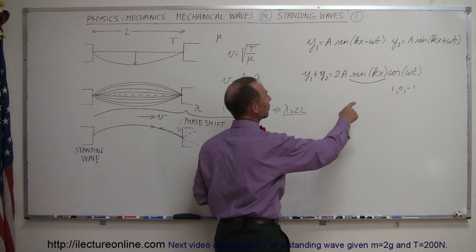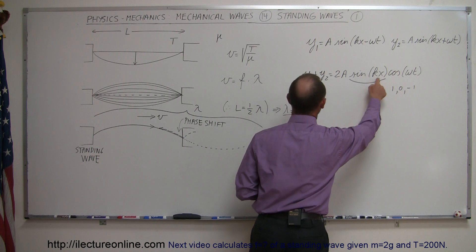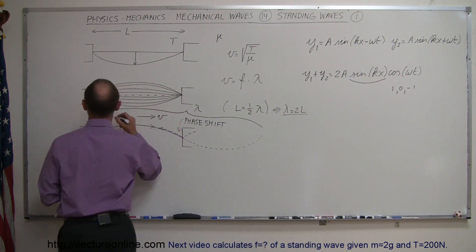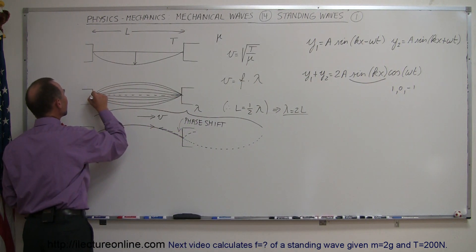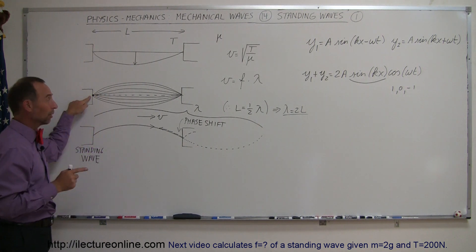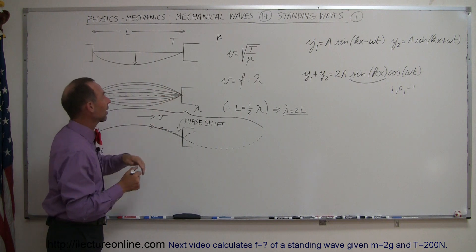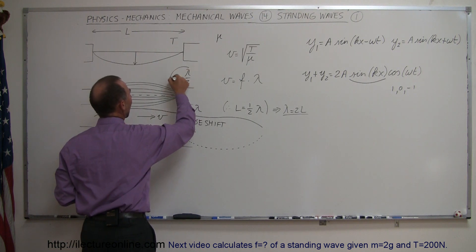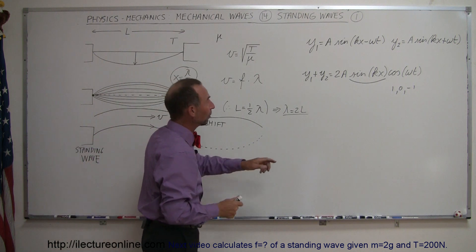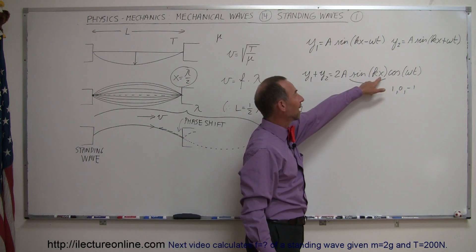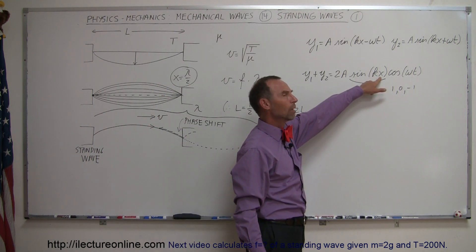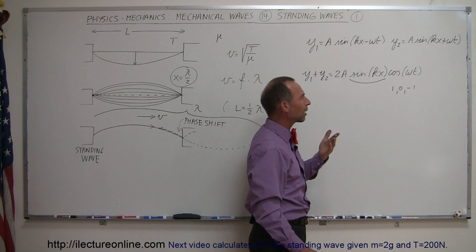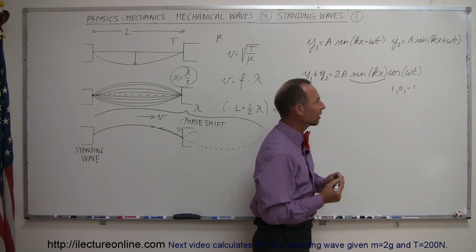Now if we take x to be equal to 0, the sine of 0 is 0. That's this point right here. Notice that the amplitude can never be anything but 0 at this endpoint. If we now go over to the other side where we have x is equal to λ over 2, a half a wavelength, then notice when I plug in x equals λ over 2. And what is k equal to? k is 2π over λ.